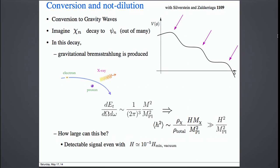This signal goes like epsilon times H times m_chi over M_Planck squared, and this can be much bigger than H squared over M_Planck squared because m_chi can go all the way to phi-dot. So this signal can be about five orders of magnitude larger than the one from vacuum fluctuations. This is an alternative way of producing gravitational waves, and if this happens, we cannot conclude from the observation that the energy scale of inflation was 10^16 GeV — it could be 10^8 GeV.